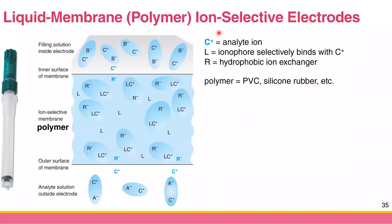The last kind of ion-selective electrode we're going to talk about in this class is called the liquid membrane ion-selective electrode, or sometimes people call it the polymer ion-selective electrode. The previous one was solid state; this one is polymer or liquid membrane. So let's see what's happening here.